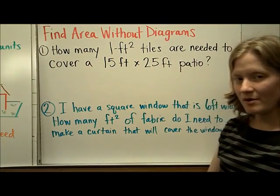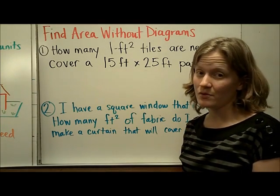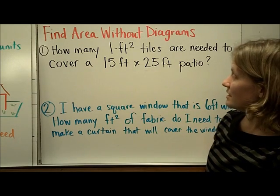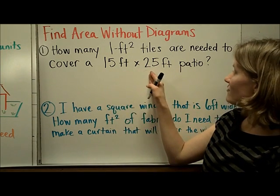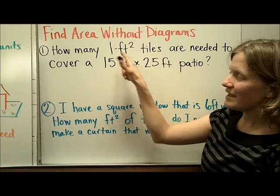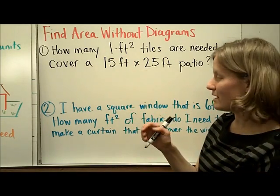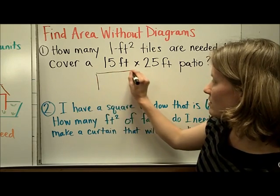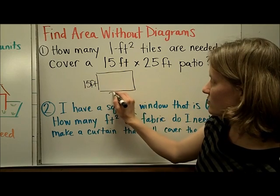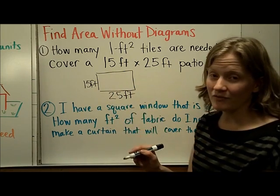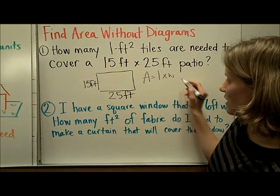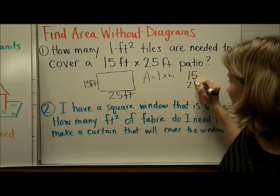So let's do 2 problems where we're not given any models and we have to use what we know in order to find the area. First question says, how many 1 foot tiles are needed to cover a 15 foot by 25 foot patio? So here they're giving you the length and the width, and they're asking you to find the area by saying, how many square tiles can you place in that space to cover it up? So you might want to draw a model like you're looking at it from the top and have 15 feet by 25 feet, and then all we would have to do in order to find the area of this rectangle is to do length times width, or 15 times 25.